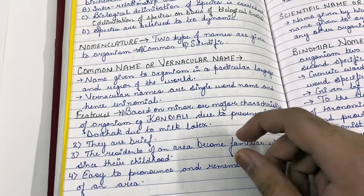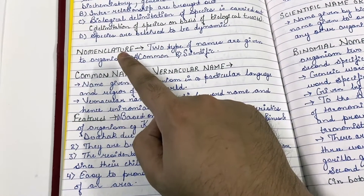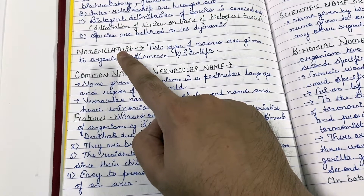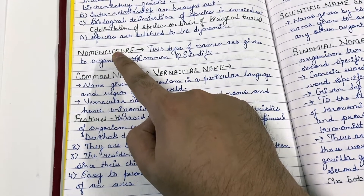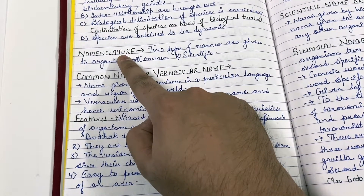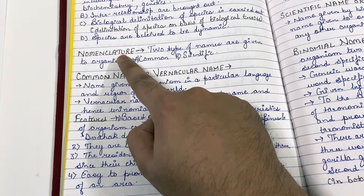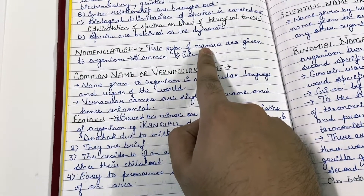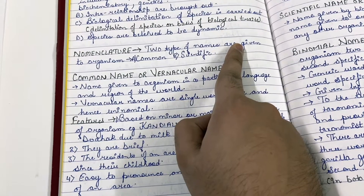Good morning students. Today our topic of discussion is binomial nomenclature and taxonomic hierarchy. First of all, let us look at what is nomenclature. Nomenclature means naming the organism — giving a name to the organism is known as nomenclature.